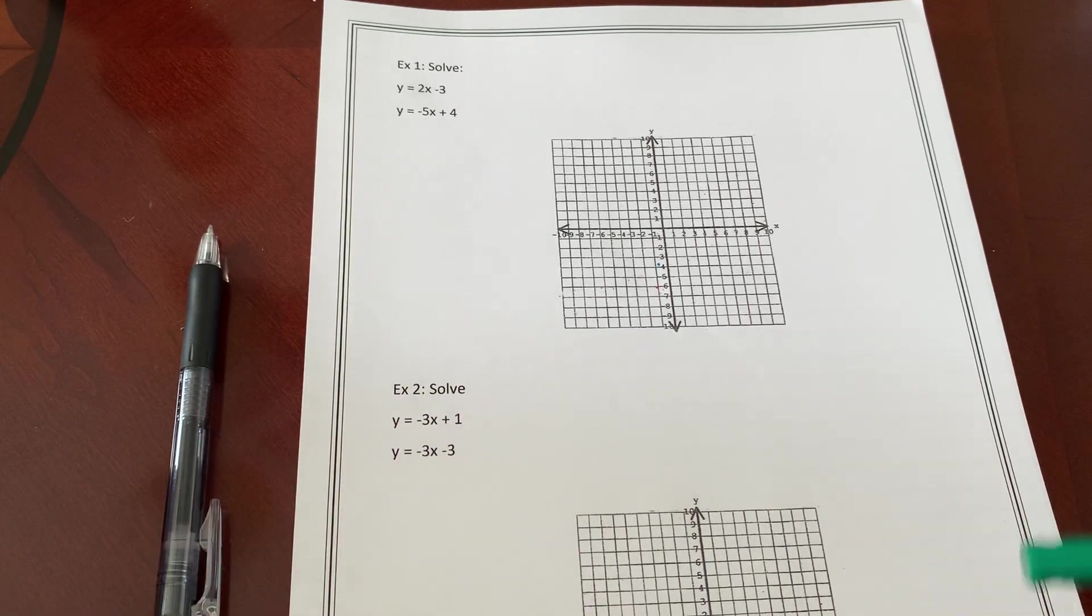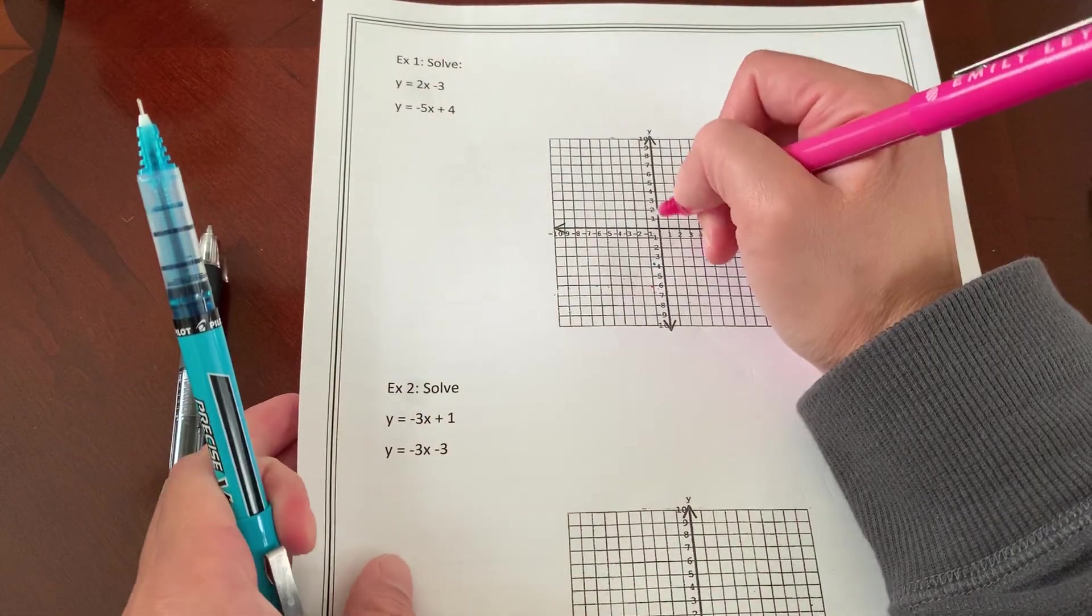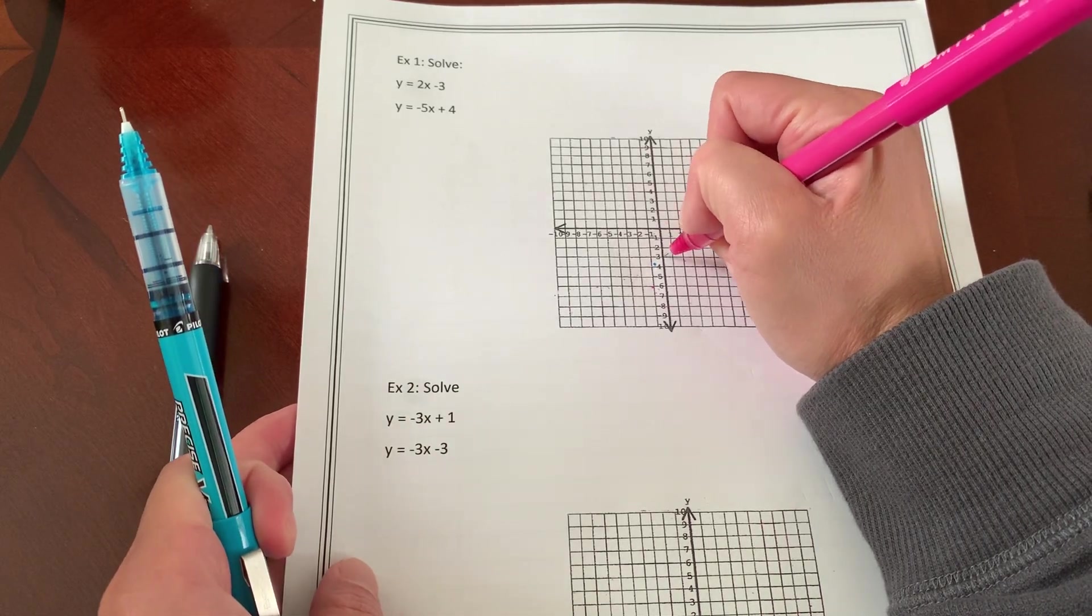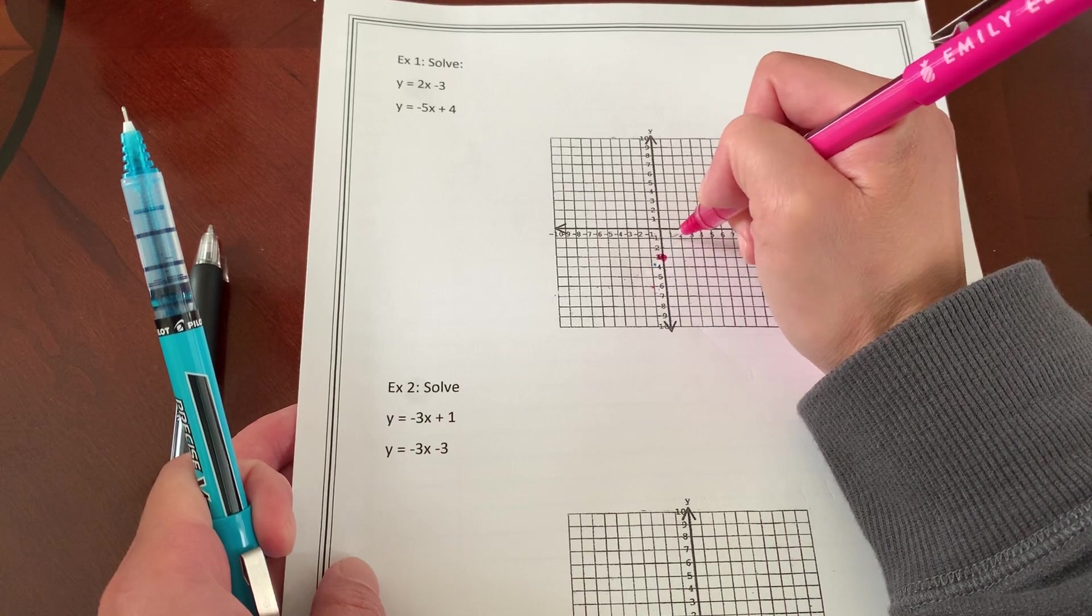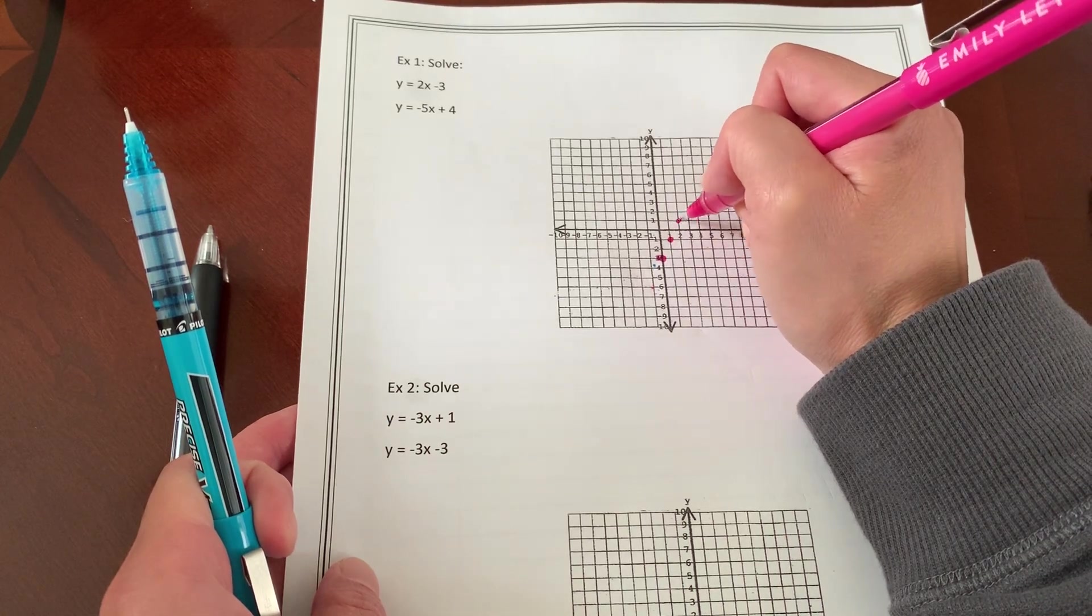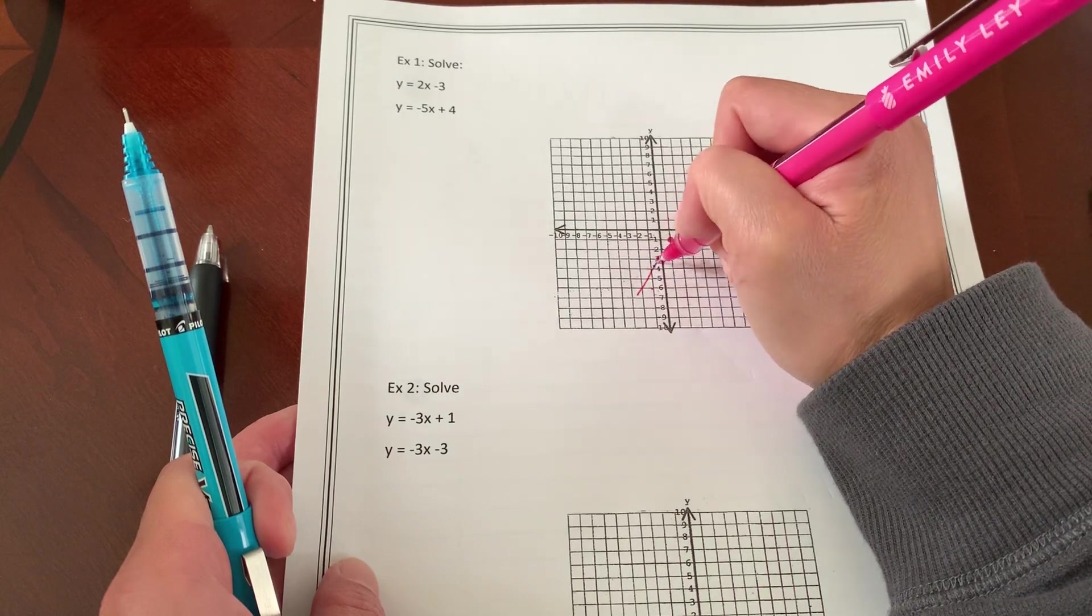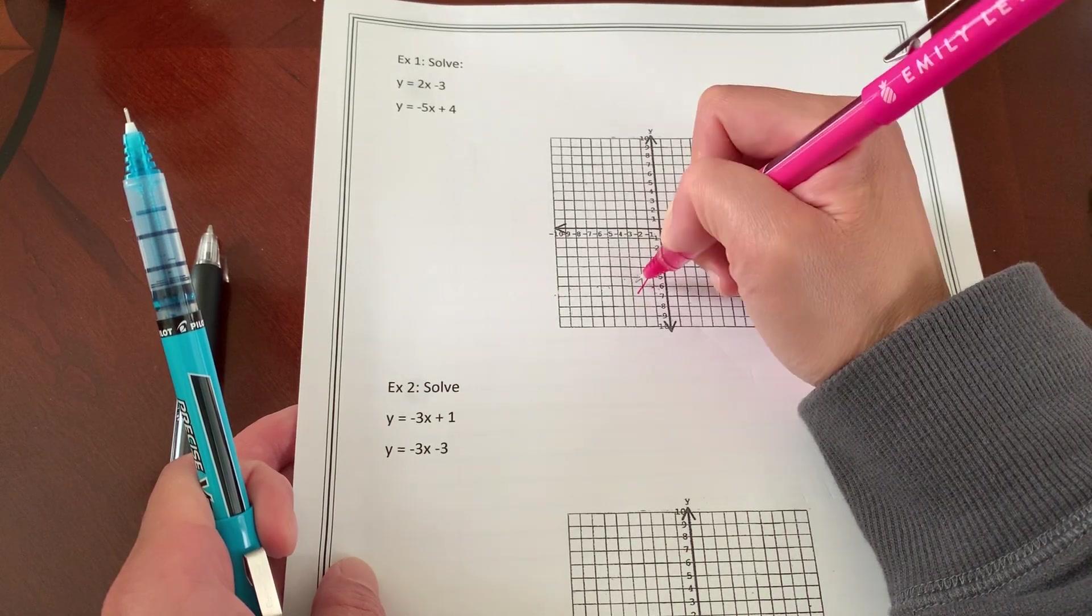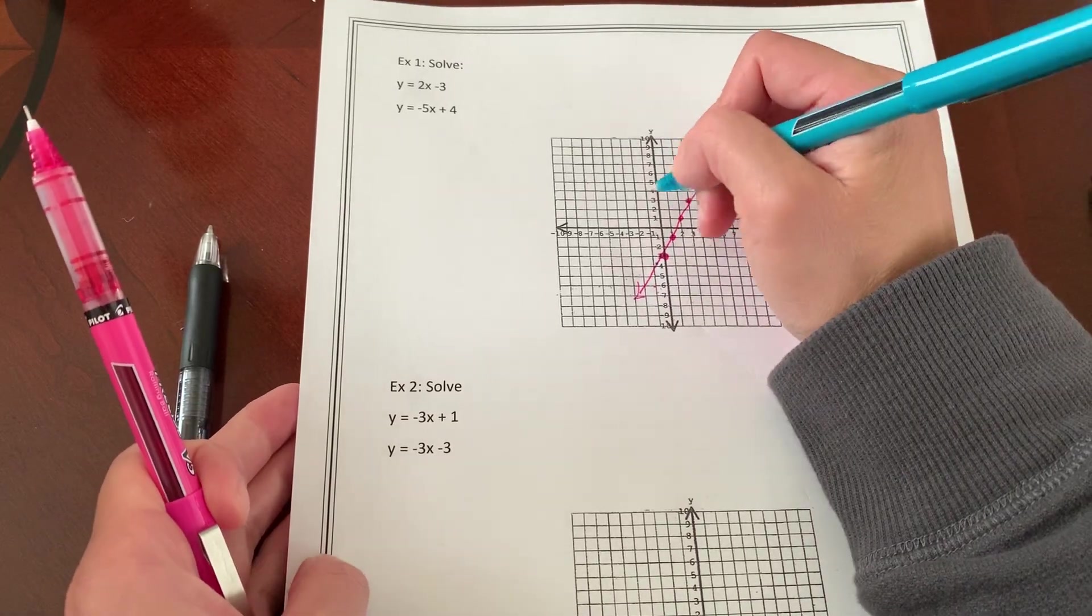So I'm going to solve this equation. Negative two minus three. So I'm going to start at negative three. And I'm going to go up two, right one, up two, right one, up two, right one. I should really be doing this with the ruler. I would suggest you do the same.